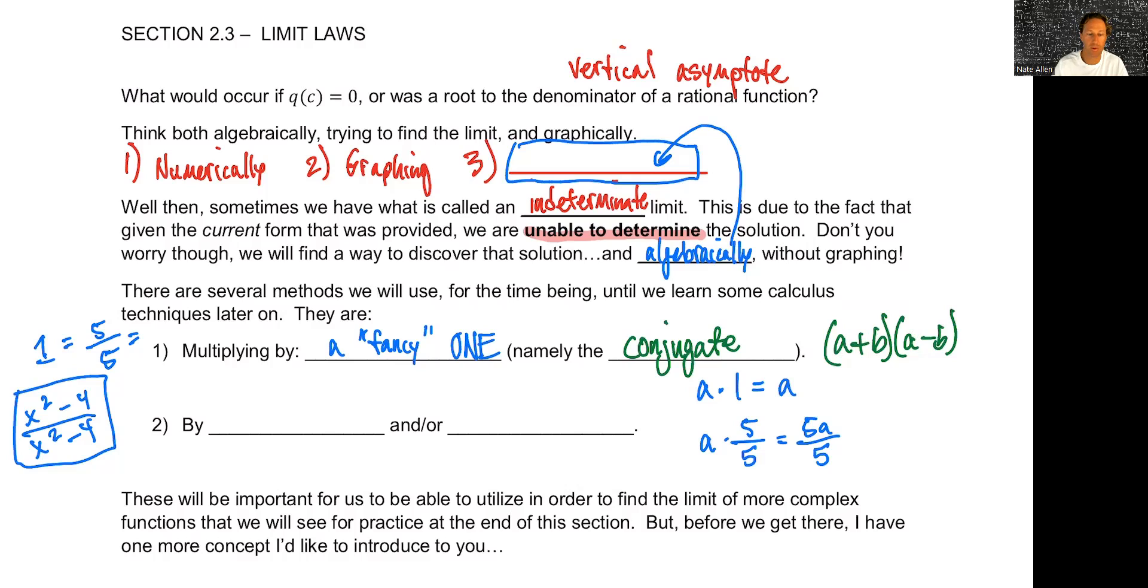And that my friends is called the conjugate. Hopefully you remember what the conjugate is. That was when if we had say A plus B, we would take and multiply that by A minus B. The only thing that changed, which is why we give it a special name, is the sign in between the two things. All right. The second technique that we will use frequently is factoring and or, these kind of go hand in hand, simplifying. Right. So these are some techniques that we will use algebraically, we're calling it. By multiplying by that fancy one, oftentimes a thing called the conjugate, and or factoring and simplifying.